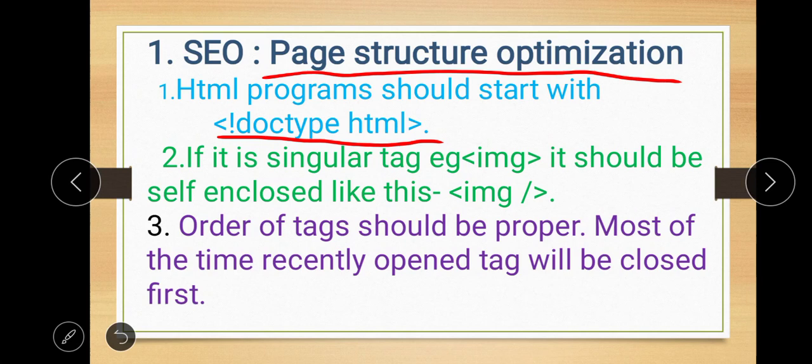The DOCTYPE declaration is written as: exclamatory mark, DOCTYPE, HTML. This one tag is used to start the web page. Then we use opening HTML tag and closing HTML tag — this basic structure should be followed.